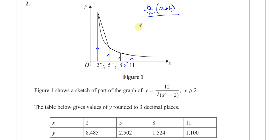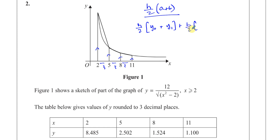We're going to use the formula h over 2 times, then we take the first ordinate y0, and add y1. That gives the area of the first trapezium. Then we add the area of the next trapezium, which is h over 2 again, using the lines y1 and y2. Then h over 2 times the third trapezium, whose parallel sides are y2 plus y3.